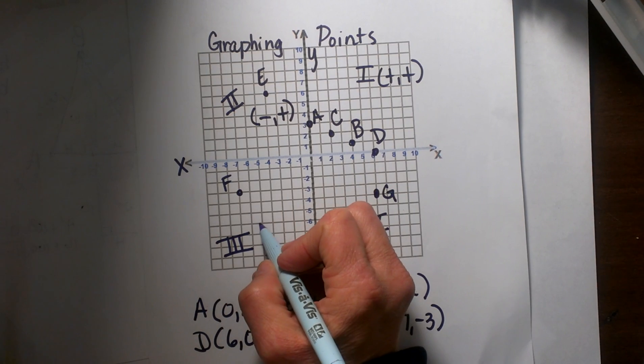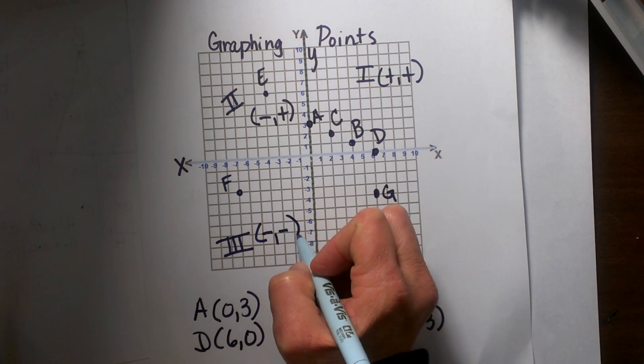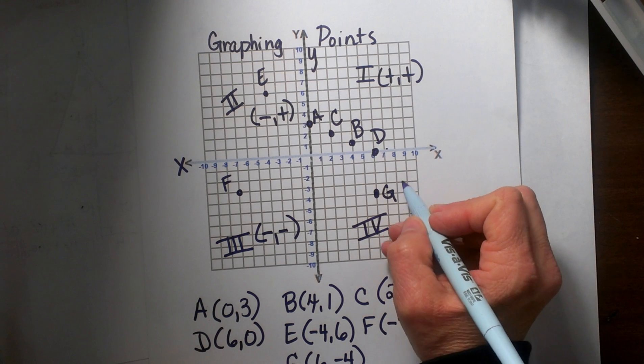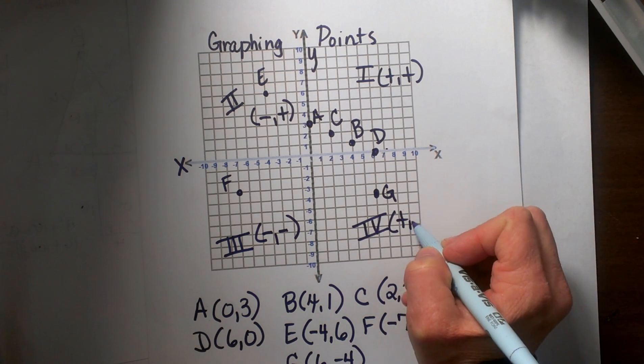All the signs in quadrant 3 are negative followed by a negative. And in quadrant 4 you are going to go positive and then negative, so all the signs over here are positive negative.